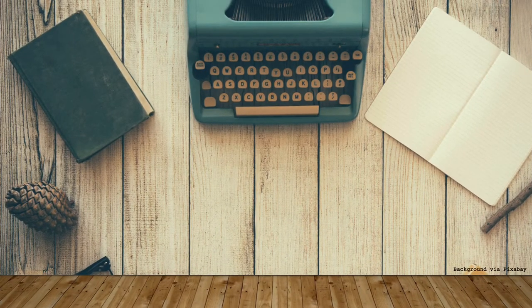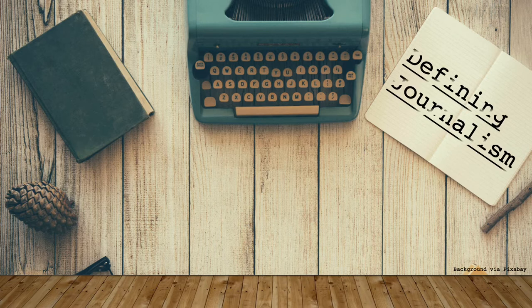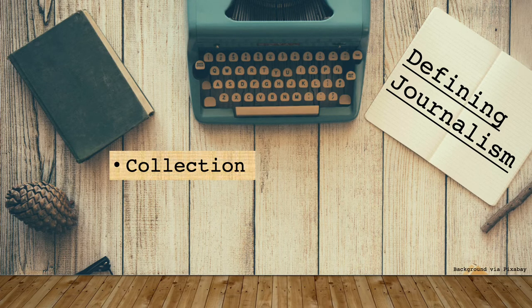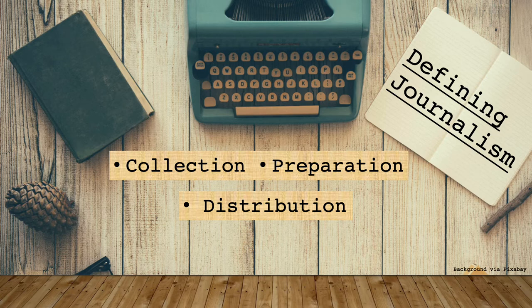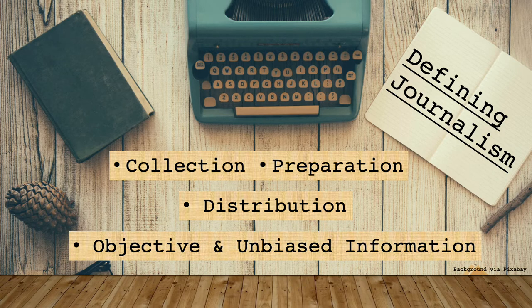Now, in order to define digital journalism, we first need to look at the definition of journalism itself. Encyclopedia Britannica defines journalism as the collection, preparation, and distribution of news. This also would include related commentary and feature materials, and they would all be produced in print or electronic media, such as newspapers, magazines, books, blogs, webcasts, podcasts, social networking, social media sites, email — pretty much anywhere where you can consume news — as well as through radio and motion pictures and television. Now, at its core, journalism as a public service should be objective and unbiased, providing people with the information that they need in order to govern their daily lives.